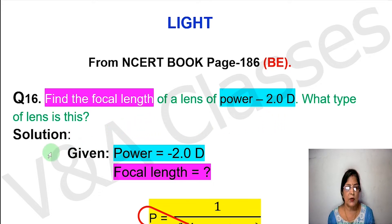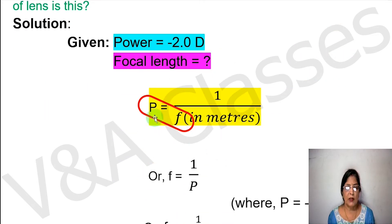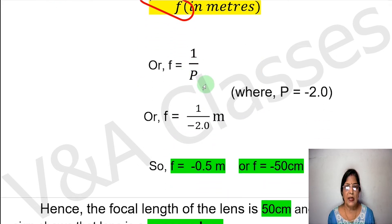Given: power equals minus 2.0 diopters. We need to find the focal length. The formula is P equals 1 by f (in meters). To find the focal length, we rearrange the formula: f equals 1 by P.